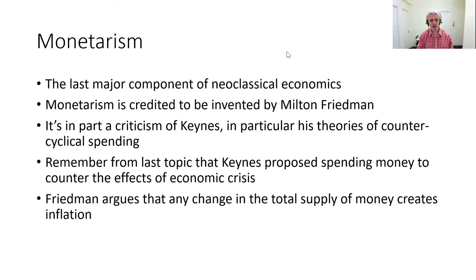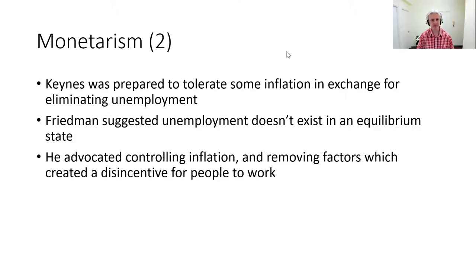Monetarism is the last big component of neoclassical economics, and Milton Friedman gets the credit for it. This perspective is partly a criticism of Keynes, particularly his counter-cyclical spending theory. What we need to remember from Keynes is that he suggested if there's an economic crisis it's a good idea for government to spend money to counter its worst effects. Friedman responds by saying if we change the total supply of money to resolve a crisis, we're going to create inflation, which will be worse than anything we do.